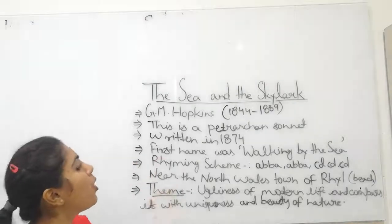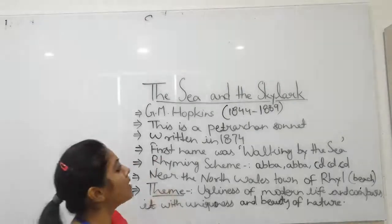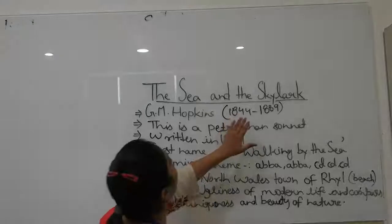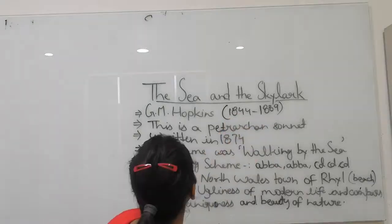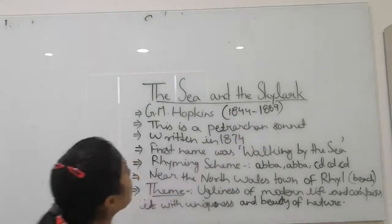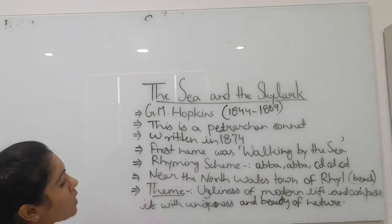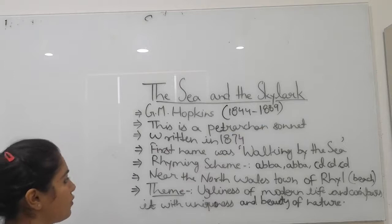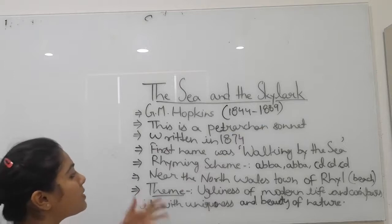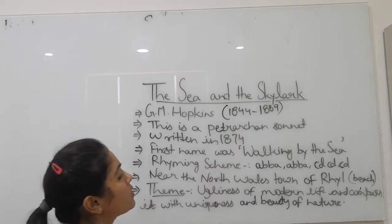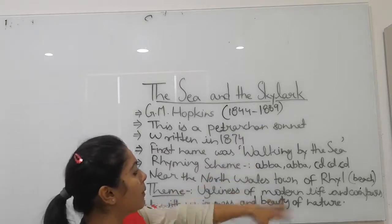G.M. Hopkins' lifespan is 1844 to 1889. This is a Petrarchan sonnet written in 1874, and the first name of the poem was 'The Sonnet of Walking by the Sea.'